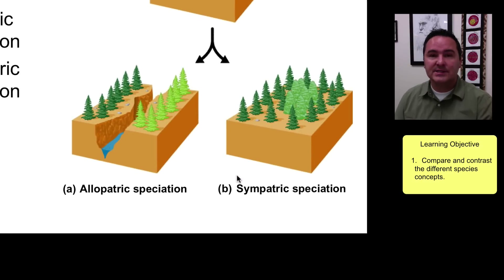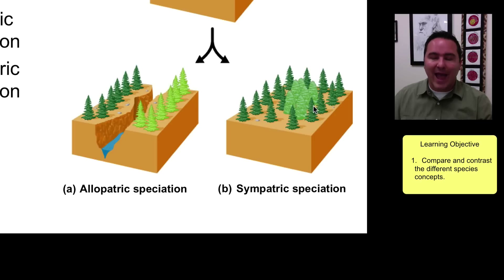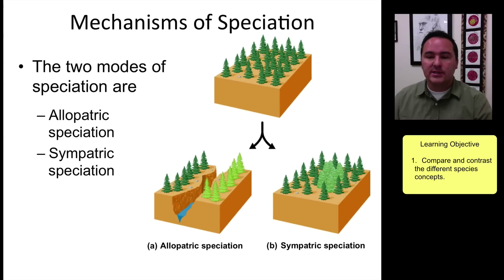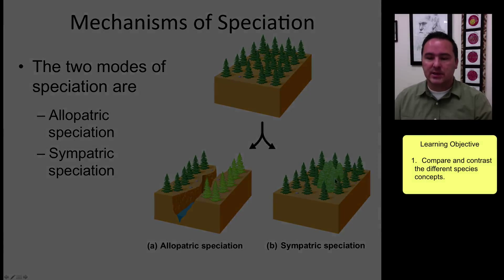The second type of speciation is sympatric speciation, where a barrier is produced without a geographic barrier being the reason. Usually this involves some form of genetic barrier that causes the new species to come about.